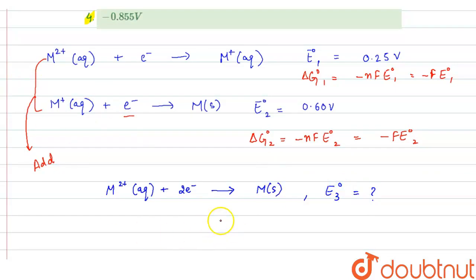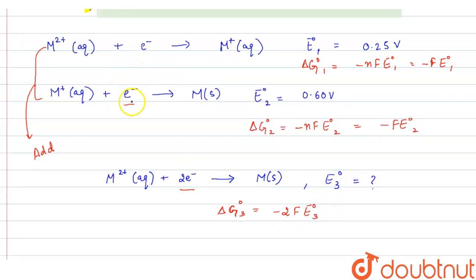Now for this reaction, if we calculate the standard Gibbs free energy change, let it be ΔG⁰₃, it would be equal to -n. Now here n is 2 because two electrons are involved, so -2F and here E⁰₃. Right, now basically we have added these two equations, then we get this equation.